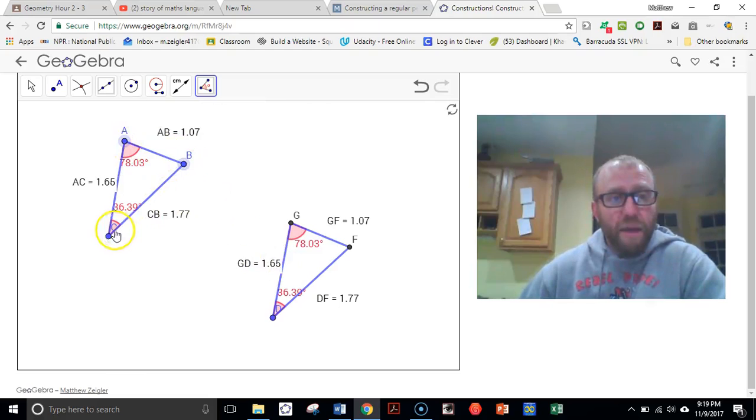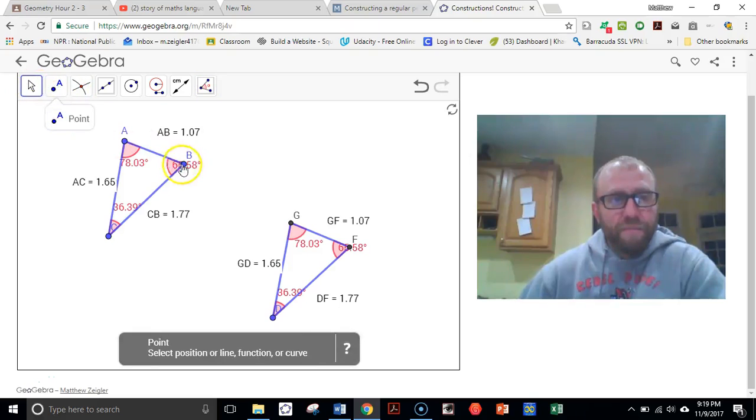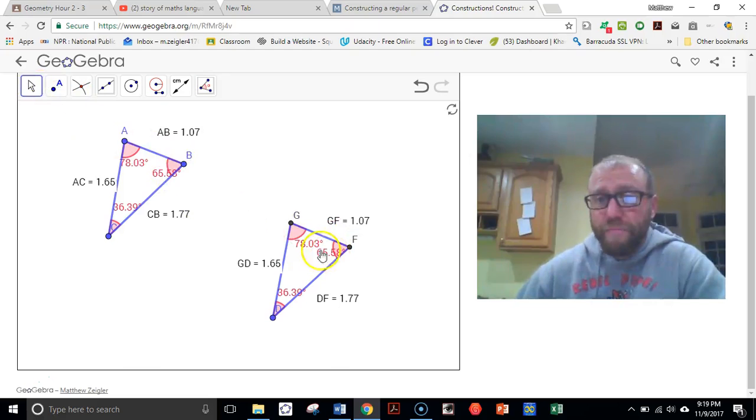But so A, B, C, and GF. D. Check there. All right. There we go. Do the same triangle.